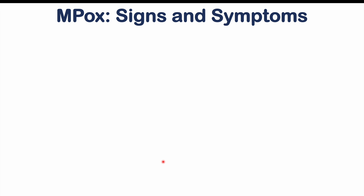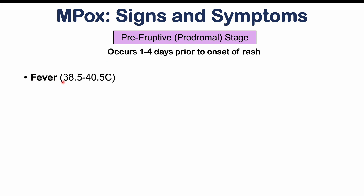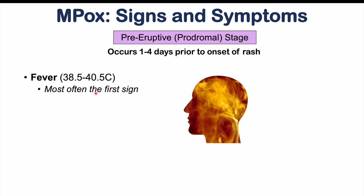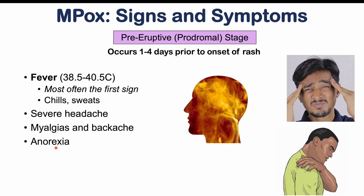The clinical findings of M-pox infection begin with a pre-eruptive or prodromal stage — a flu-like illness occurring one to four days prior to onset of the rash. Symptoms include fever of 38.5 to 40.5 degrees Celsius, which is often the first sign of infection, along with chills, sweats, severe headache, myalgias, back pain, and anorexia or reduced appetite — all very common with a viral infection.